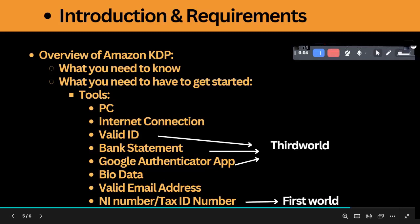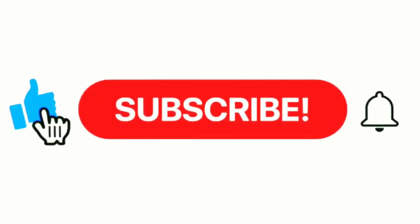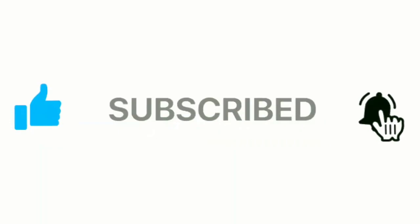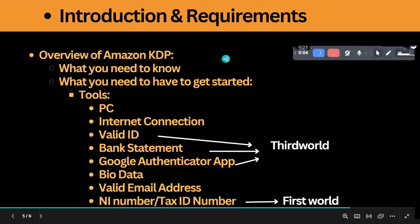Welcome to the next module in the course, which is about introductions and requirements. We start with an overview of Amazon KDP — short for Amazon Kindle Direct Publishing — the platform created by Amazon to enable authors to self-publish their own books, build a name for themselves, and make money from their writing.